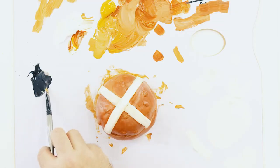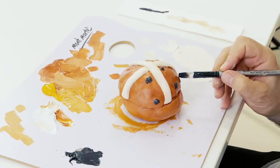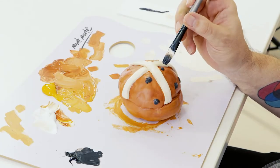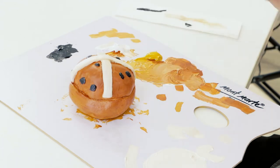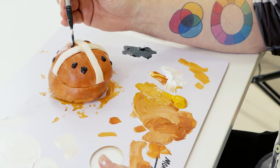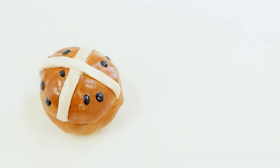The last step is to paint the raisins. We do this with black mixed down with a touch of white. And voila! You got yourself a pretty cool hot cross bun trinket dish there.